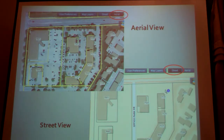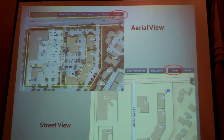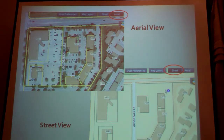One thing I wanted to point out: if you want to direct clients to this site, in our tools we have a street view and an aerial view. The difference between the two is one gives you an aerial, and one takes the aerial away so you can better see where the streets and buildings are.